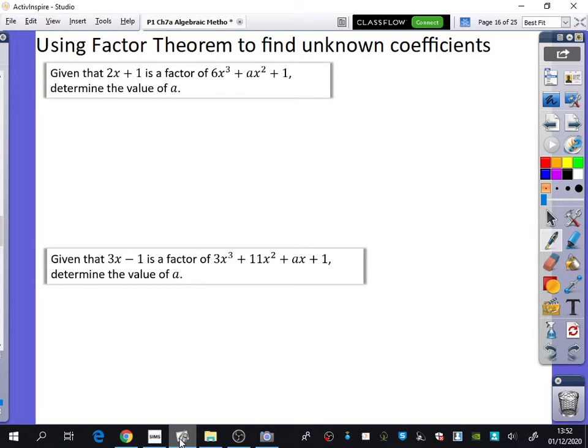We're going to now use the factor theorem for another process. So far with the factor theorem, we've actually done is factorize expressions. This time, we're going to use it to find unknown coefficients. So here it says, given that 2x + 1 is a factor of 6x³ + ax² + 1, determine the value of a.